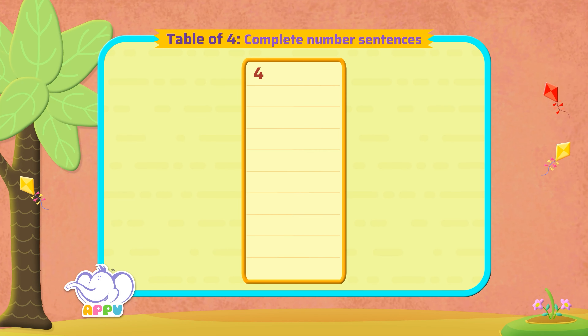What is four times one? We have to skip count by four ones. So the answer is four.